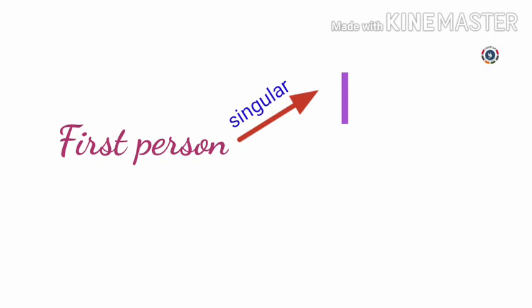Let us see what is meant by first person. First person refers to oneself — 'namma'. So, first person singular uses the pronoun 'I', and first person plural uses the pronoun 'we'. So 'I' is used in singular and 'we' is used in plural for the first person.